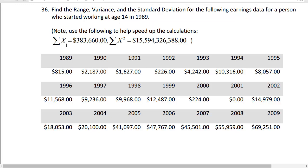They give us some summary values to help us do the calculation. We have the sum of x, that's the sum of all these x values, and we have the sum of x squared, that's the sum of all these x values squared.